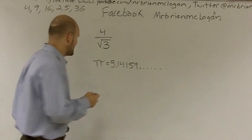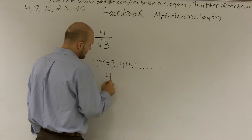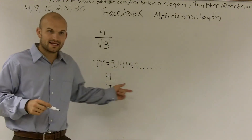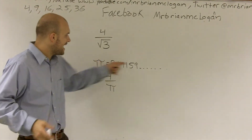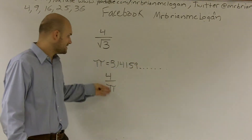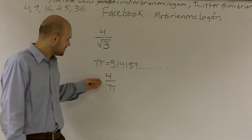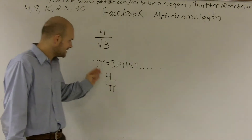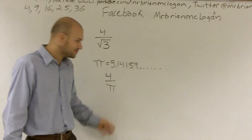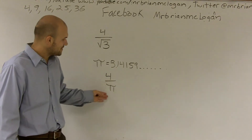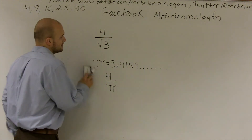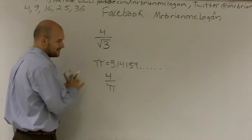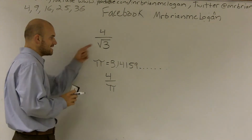So if I were to divide 4 divided by pi, would we ever get a number that stops? No, because since pi never stops, we're never going to get a number that stops. So 4 cannot be divided by pi — pi cannot be divided into 4.